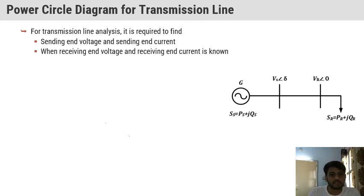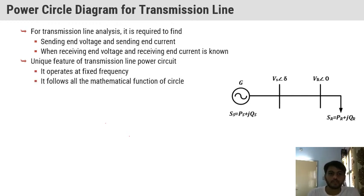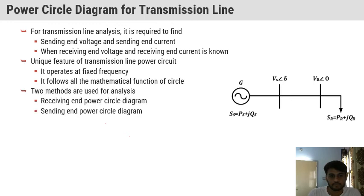For transmission line analysis, it is required to find sending end voltage and sending end current when receiving end voltage and receiving end current is known. This is the main reason why you are studying these power calculations — one parameter is known and another is unknown. A unique feature of the transmission line power circuit is that it operates at a fixed frequency. Frequency is fixed at any place, whether it is the sending end or receiving end, and it follows all mathematical functions of the circuit. Two methods are used for analysis: the receiving end power circle diagram and the sending end power circle diagram.